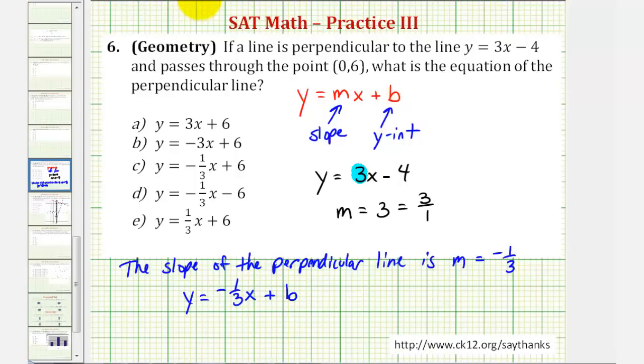But we're also told that the line passes through the point (0,6), and here's where we're kind of lucky, because the point (0,6) is on the y-axis and therefore is the y-intercept of the perpendicular line. So since we're given the point (0,6) where this is the y-intercept, we know b must equal positive 6.